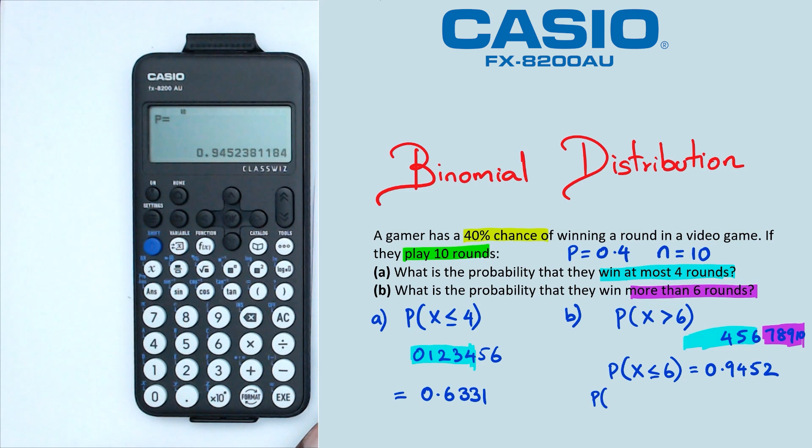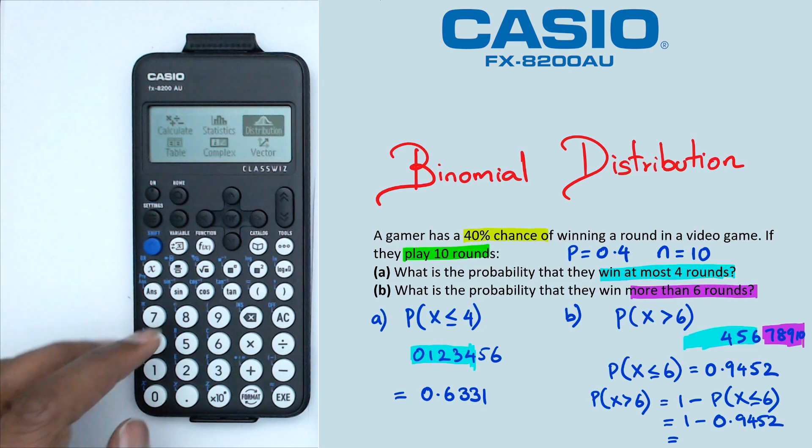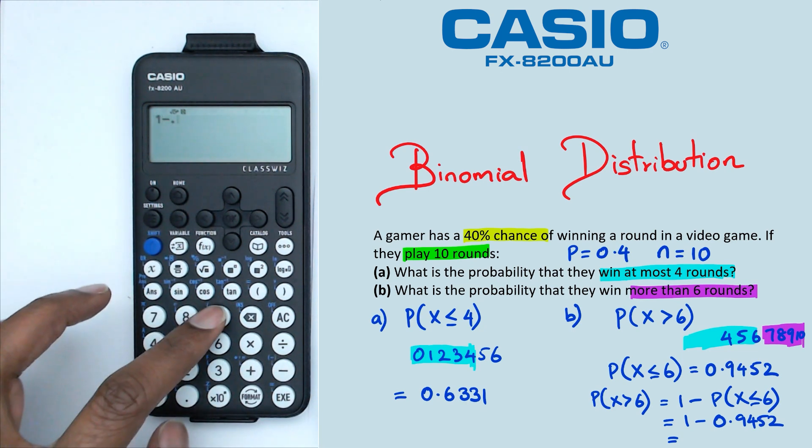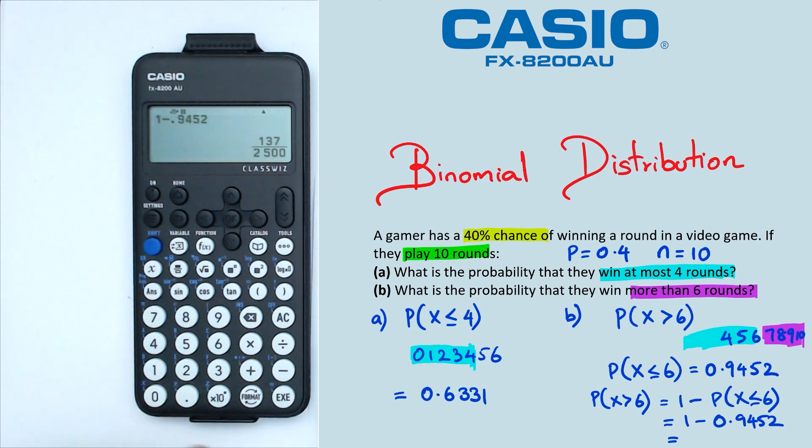And if we want to find probability of x greater than 6, we can say that this is 1 minus probability of x less than or equal to 6, which is 1 minus 0.9452. I'm running out of space here, so I'm just going to go into the main menu and calculate. I'm going to go 1 minus 0.9452. And when I do this, I'm going to get a fraction. I'm just going to click shift, shift, exe, and that's going to give me a probability of 0.0548.